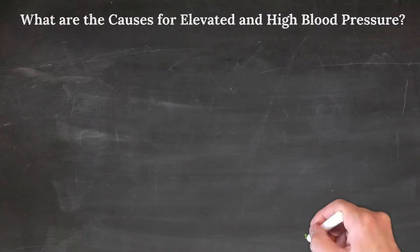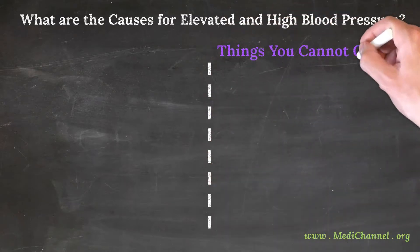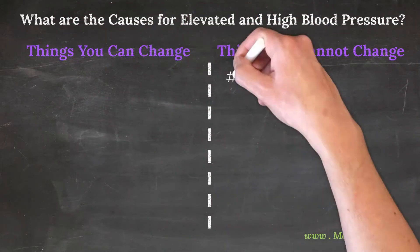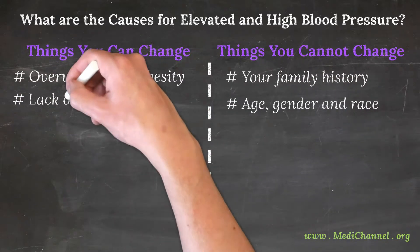The causes and risk factors for stage 1 hypertension are similar to that of elevated hypertension, with age, family history, lifestyle habits and underlying sicknesses being the major influencing factors.